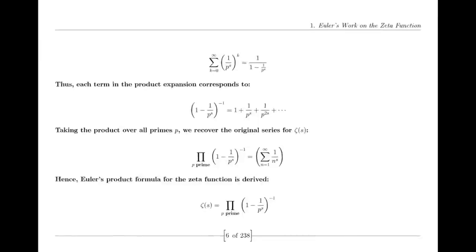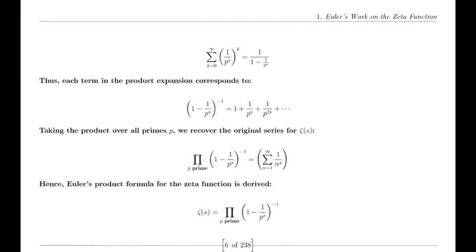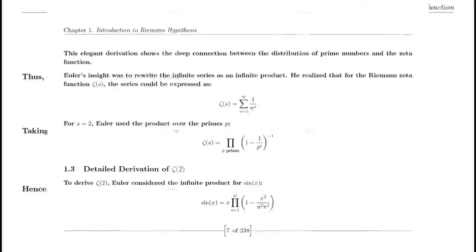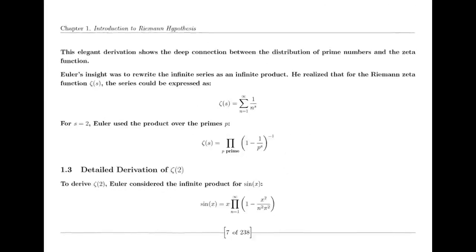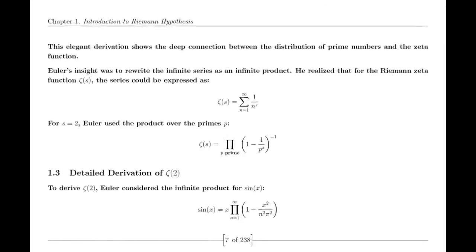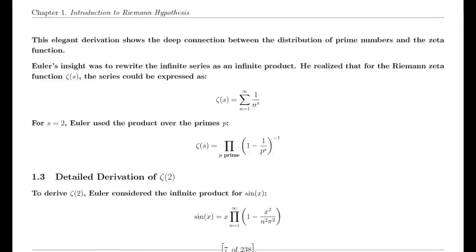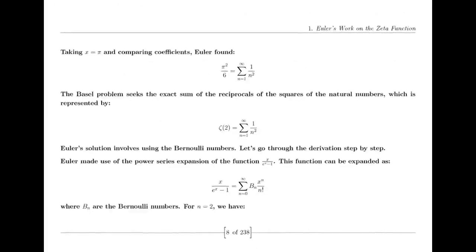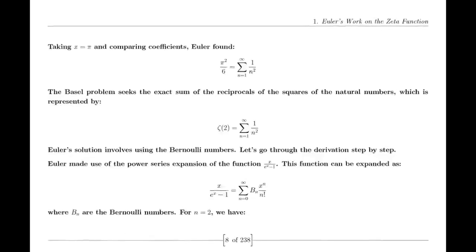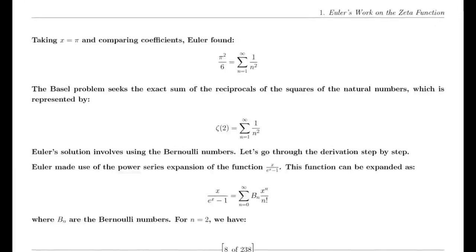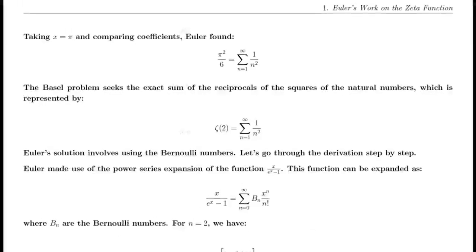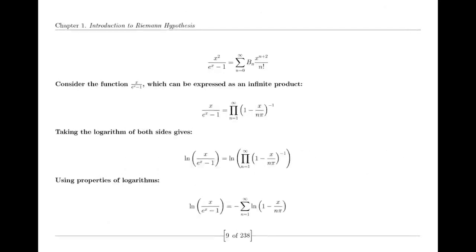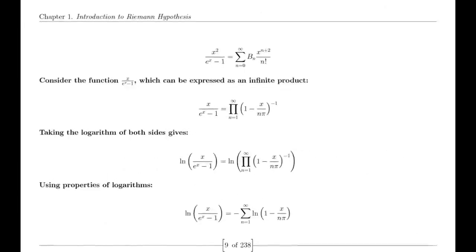Riemann also made use of the Jacobi theta function, which has significant applications in various areas of mathematics. The theta function's series representation and modular properties were instrumental in Riemann's derivation of the functional equation for the zeta function. This equation is crucial for understanding the zeta function's behavior across the complex plane and highlights its intricate connections to other mathematical functions.